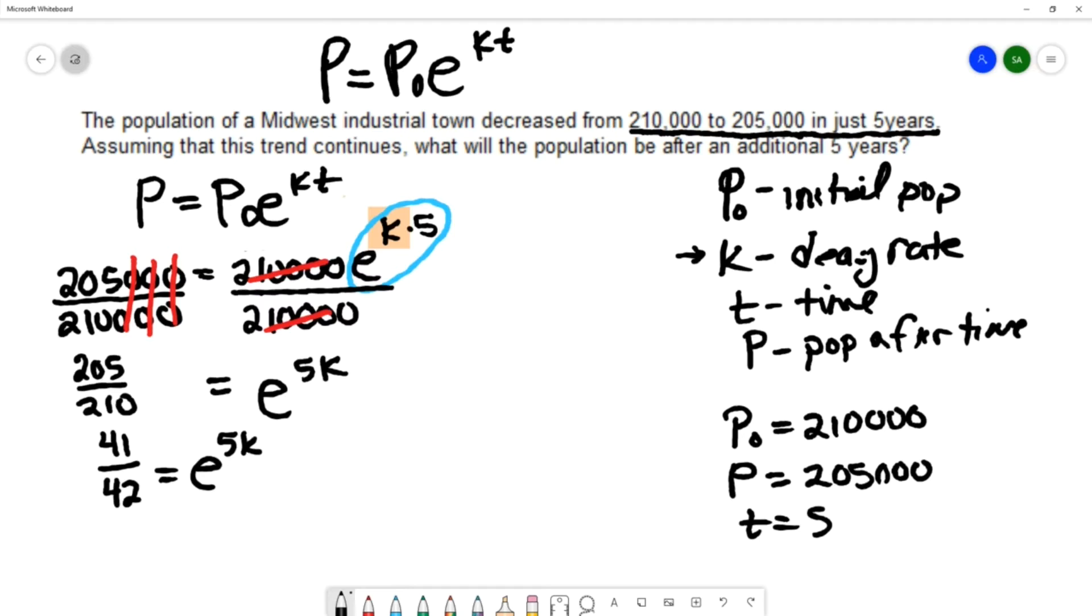So we have 41 over 42. We're going to continue to solve this exponential equation. The methods we typically use are relating the bases, which we can't do in this example. Converting to a log or taking the log of both sides—we can do either of those methods. I prefer to take the log of both sides.